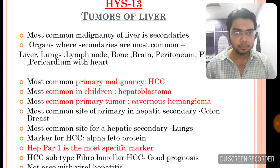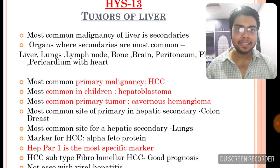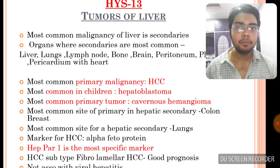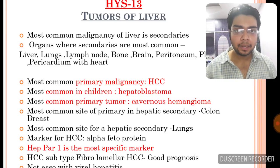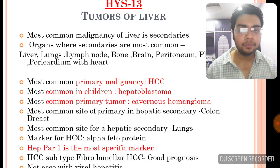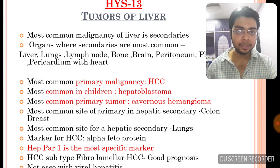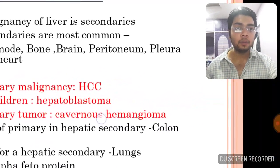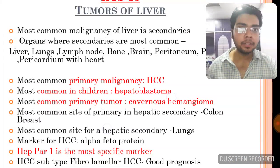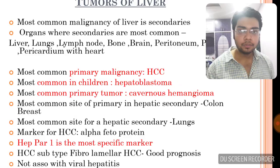Continuing with tumors of liver: the most common overall malignancy seen in the liver is secondary. This applies to many organs — the most common malignancy for liver, lungs, lymph nodes, bone, brain, peritoneum, pericardium with heart, and pleura are all secondaries.